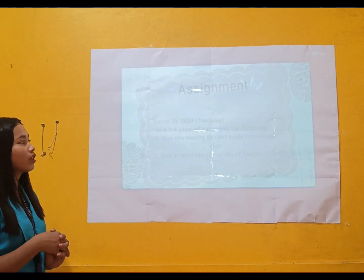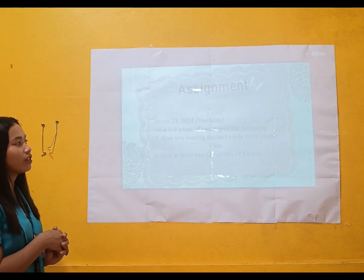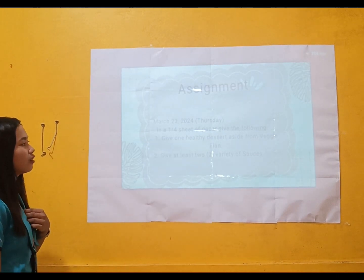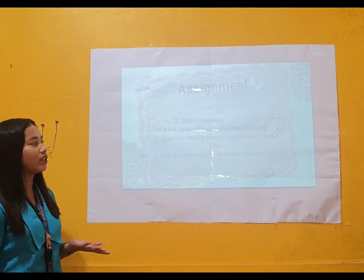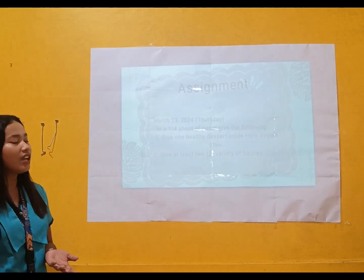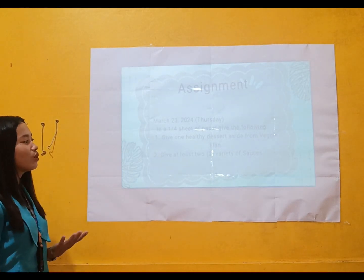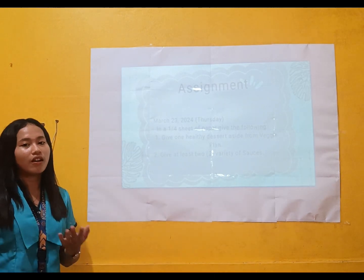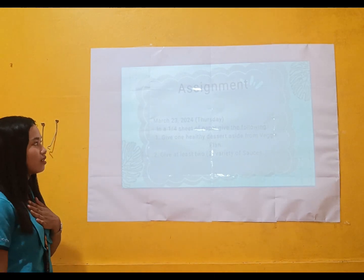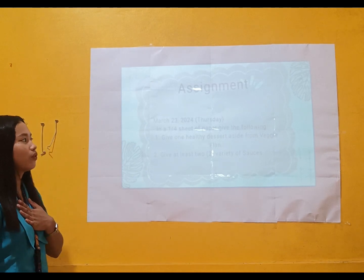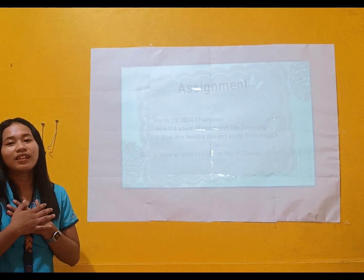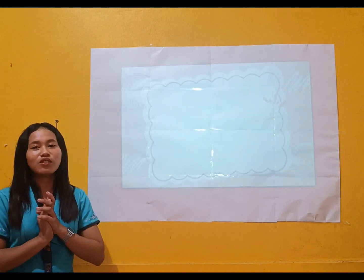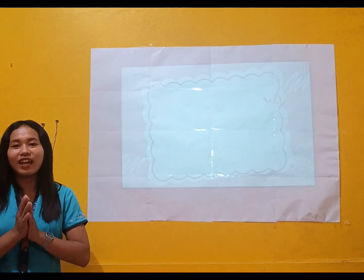For our assignment, prepare a one-fourth sheet of paper and answer the following two questions: first, give one healthy dessert aside from veggie flan; second, give at least two varieties of sauces. This will be passed on Thursday, March 23, 2024. Did you get that, class? Okay, very good.